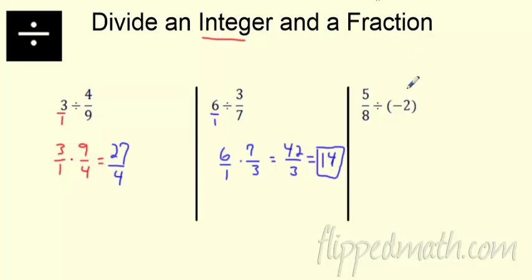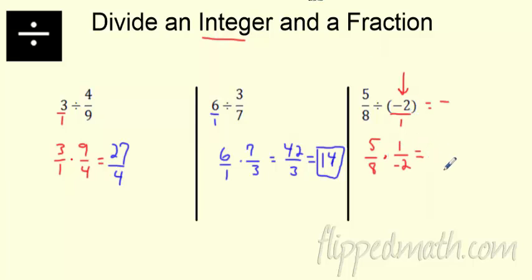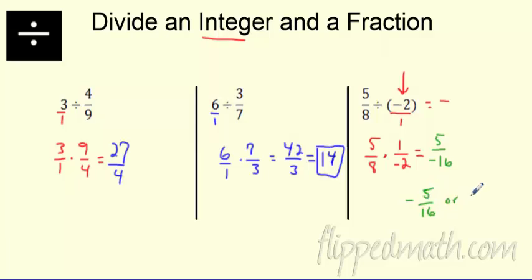What if the integer is the second number? Before we start — a positive divided by a negative is going to be negative because the signs are different. I leave the first fraction alone and multiply. Flip the second: negative two over one becomes one over negative two. On top, five times one is five. On bottom, eight times two gives negative 16. That negative sign can be out in front — it's the same as negative five over 16. As long as one of them is negative, you're fine. All right, that is it for this section. Good luck on the mastery check. Peace out, keep it real.